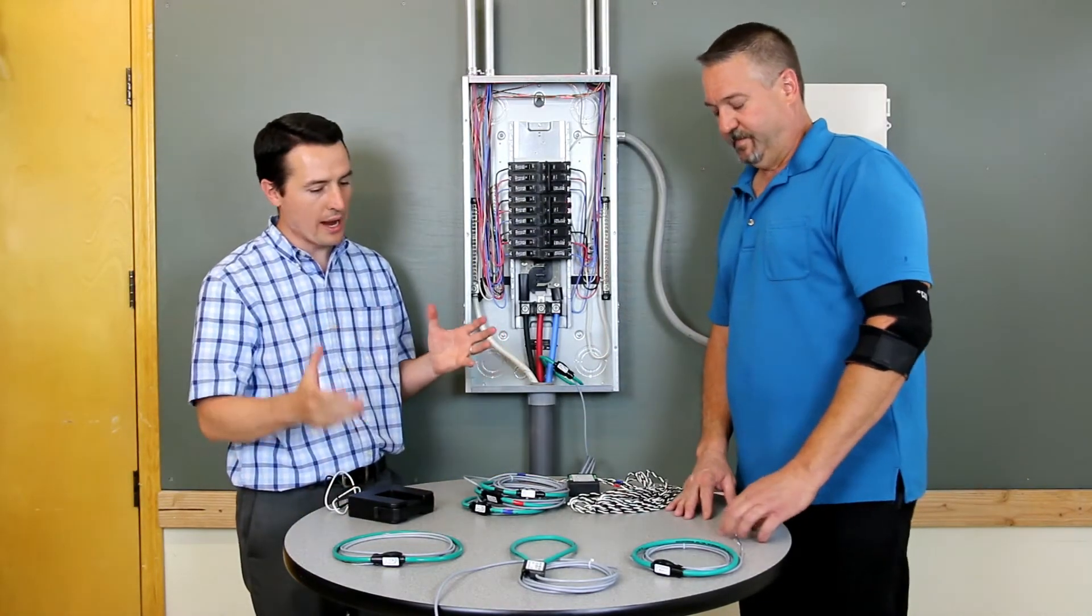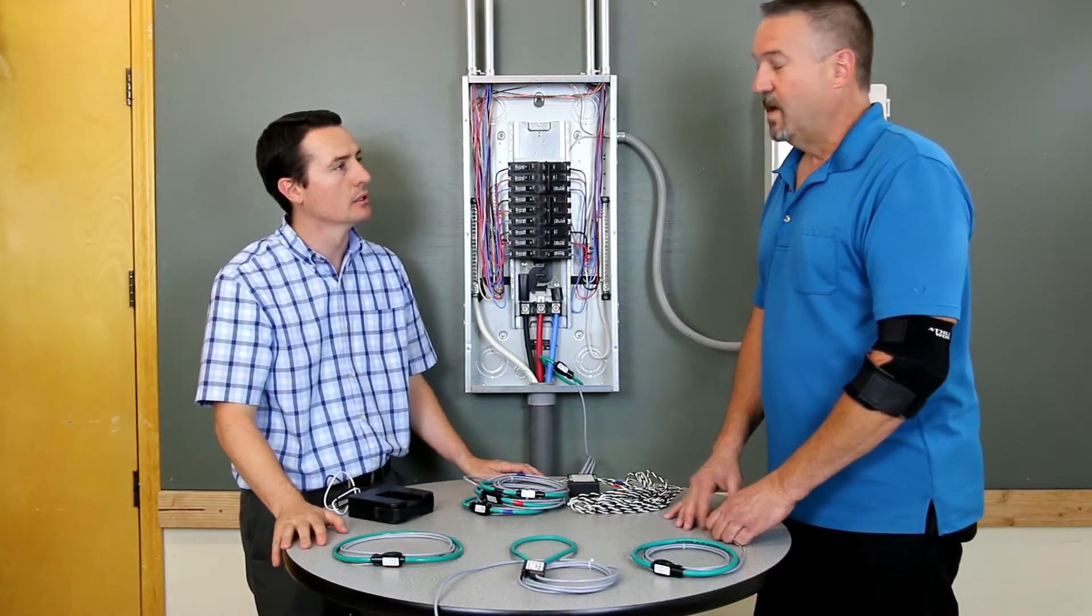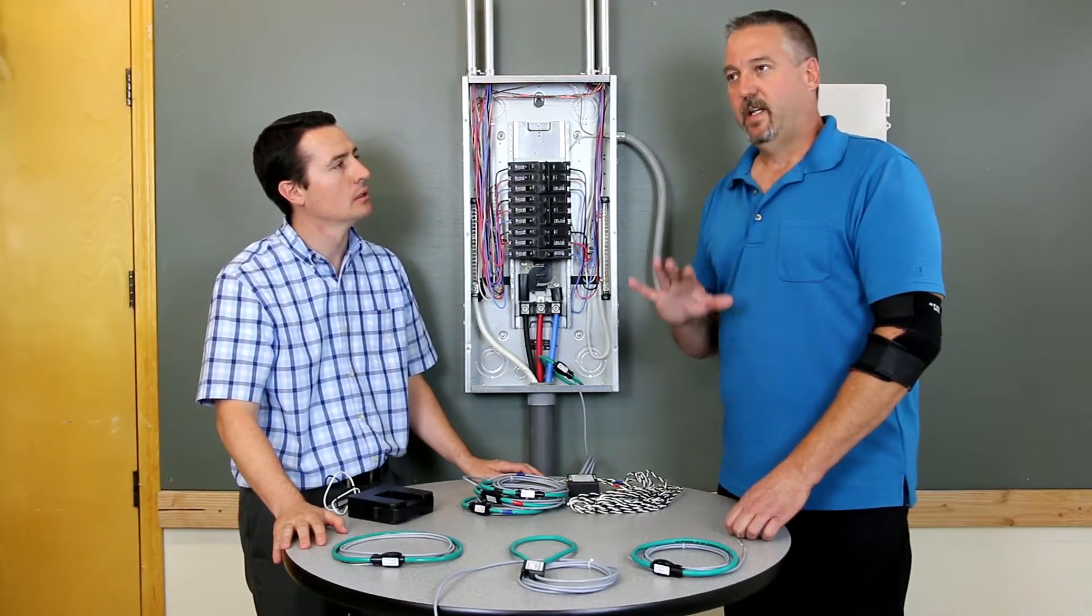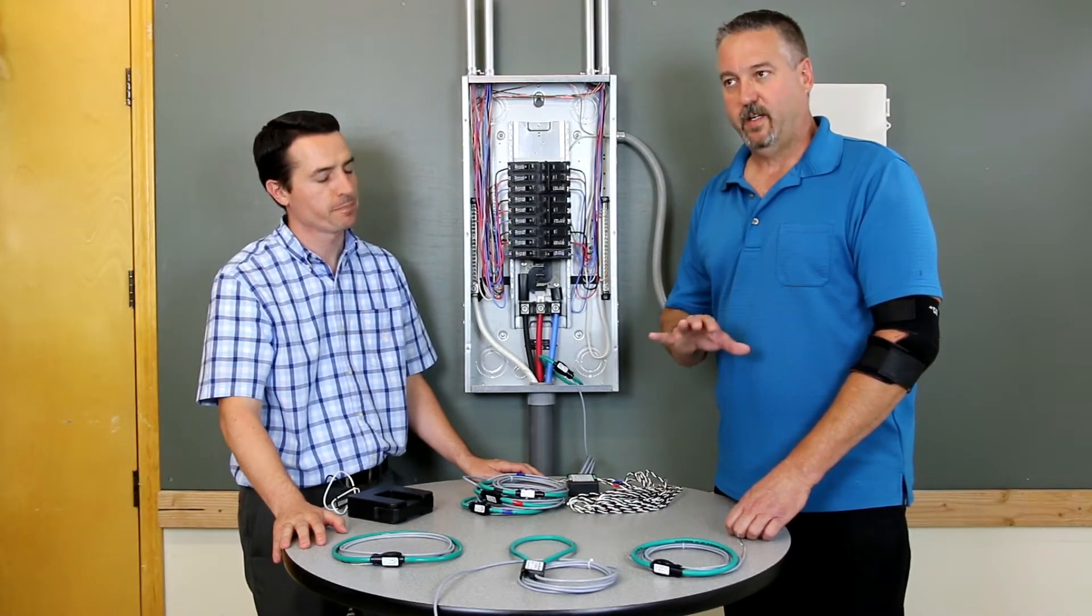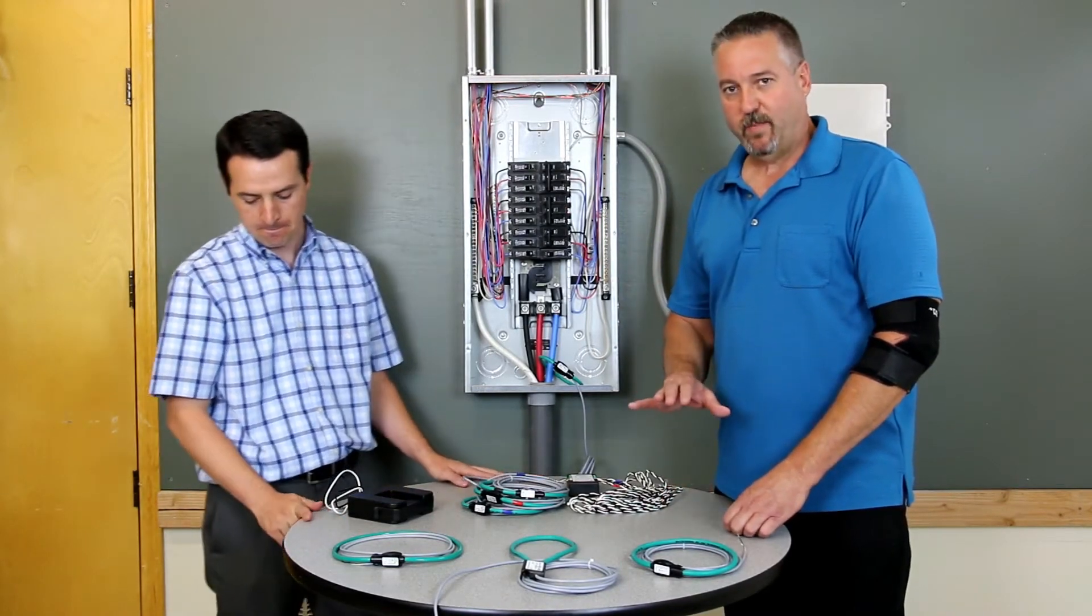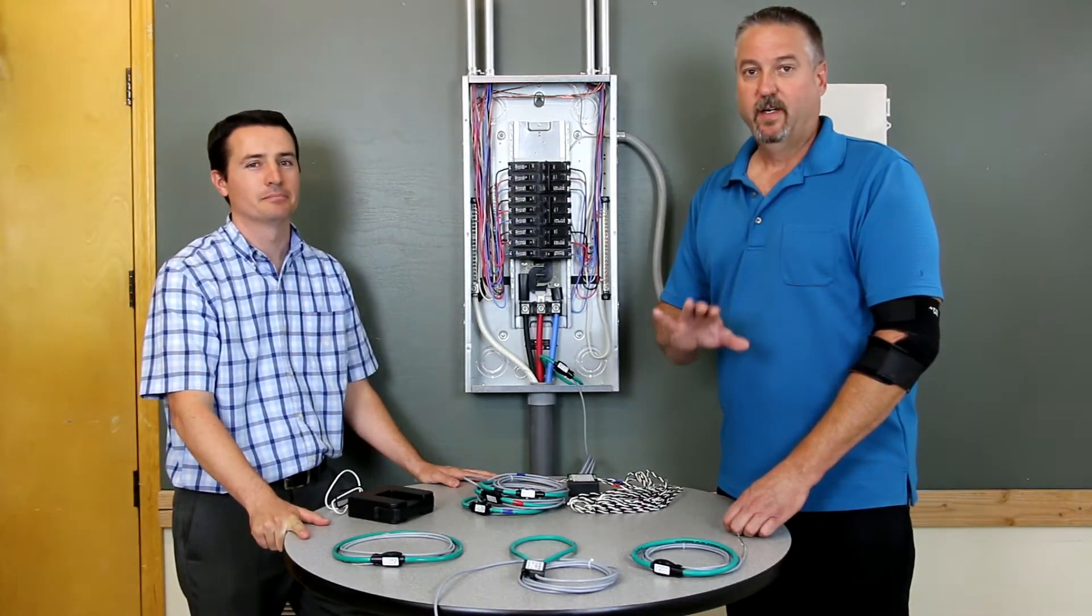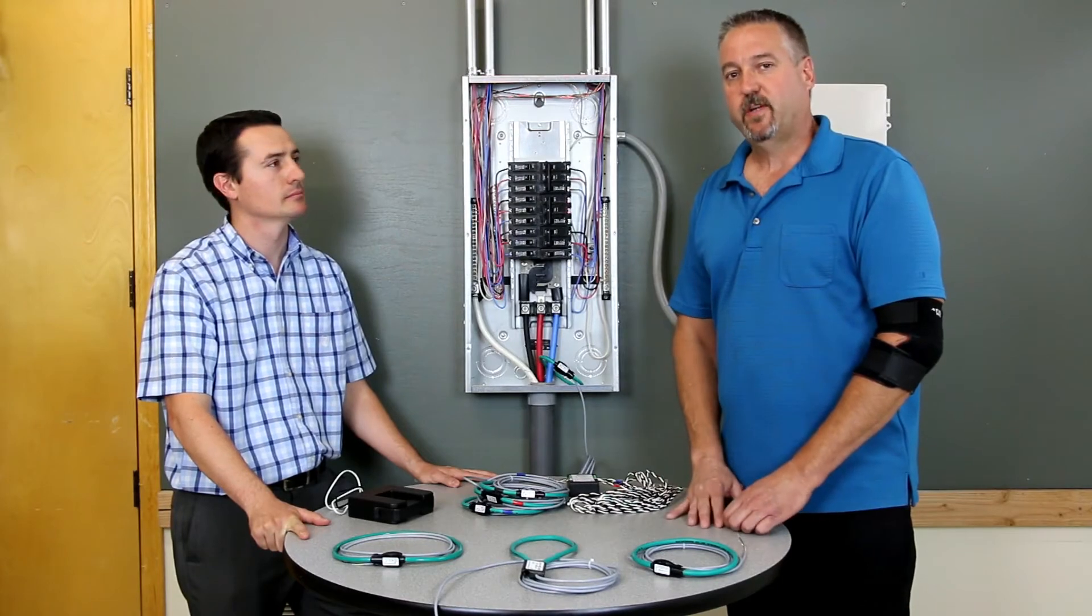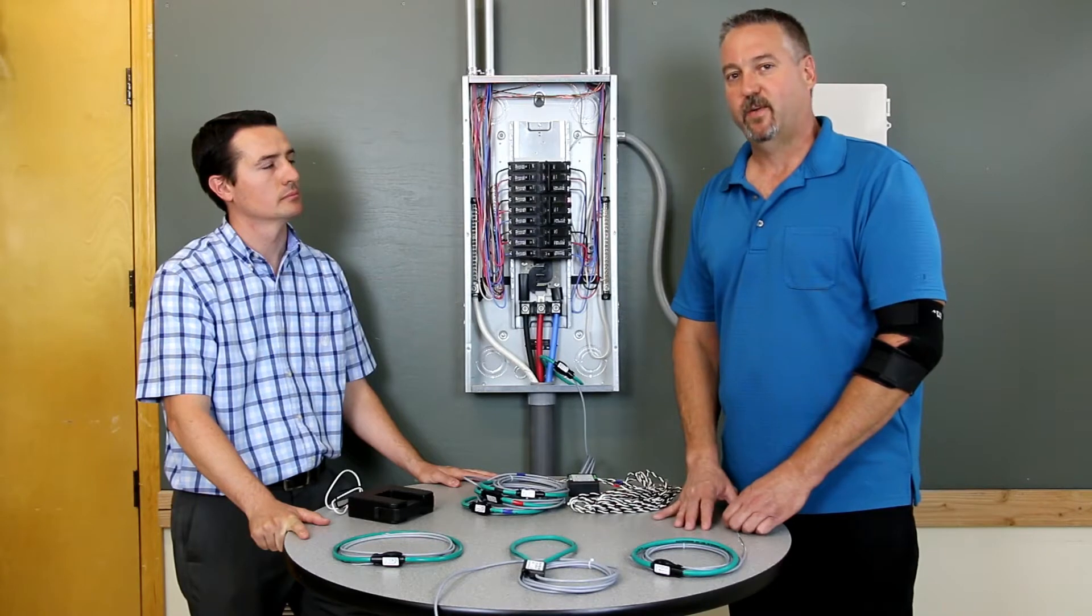And why do I want to monitor my power with a Rogowski coil or a CT? Power monitoring is critical in the area of power savings. It's also commonly used to monitor equipment in a manufacturing facility or even a grocery store to look for the trends in the power consumption. If a piece of equipment starts to increase in its power consumption you know something is starting to go wrong.